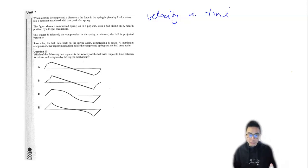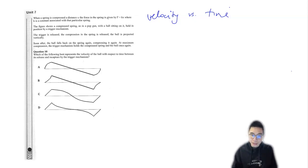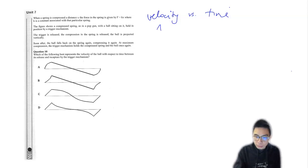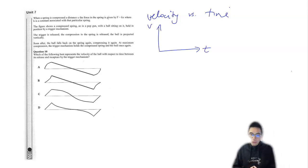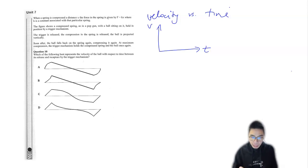If it mentions it in this order, usually the first parameter will be the y-axis and the second will be the x-axis. So if I was to draw a velocity and time curve, the axes would look something like this. So that we get our bearings, let's have a look at some of the options.